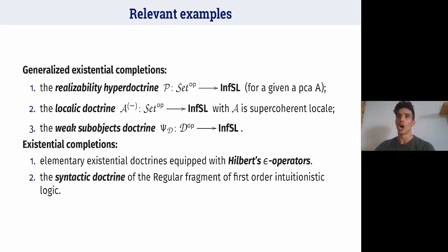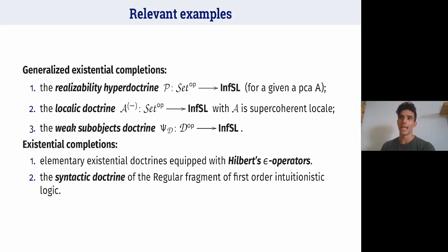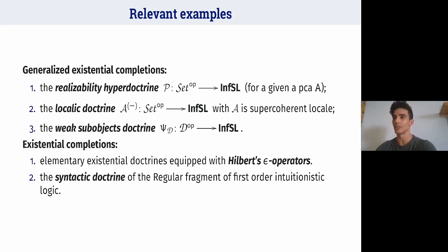Relevant examples of generalized existential completions are: first, the realizability hyperdoctrine — if we consider a PCA, the realizability hyperdoctrine is the generalized existential completion of the doctrine of singleton predicates. Moreover, if we consider a localic doctrine where the locale is supercoherent, then this doctrine is a generalized existential completion. Finally, the weak sub-object doctrine on a category with finite limits is a generalized existential completion. Examples of existential completions include elementary and existential doctrines equipped with Hilbert epsilon operators, and the syntactic doctrine of the regular fragment of first-order intuitionistic logic.